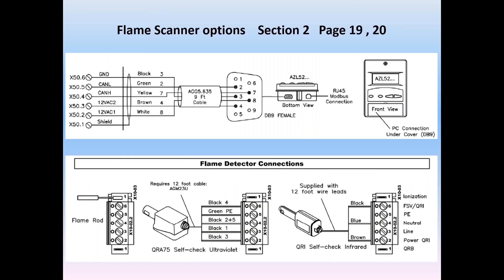Also detailed in technical instructions is the pinout of the pre-made AZL cable, part number AGG5.635. This is to assist in troubleshooting. Note the AZL's three ports: a DB9 on the bottom of the AZL for CAN bus, also on the bottom an RJ45 RS232 Modbus RTU connection for the BMS, and thirdly, on the front of the AZL behind a closed door, a DB9 for connection to an optional PC for backup and restore.